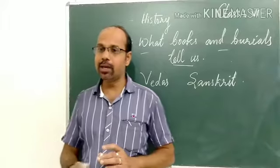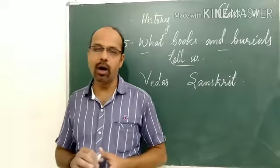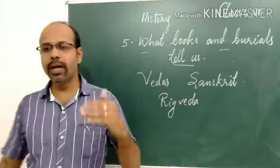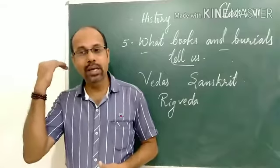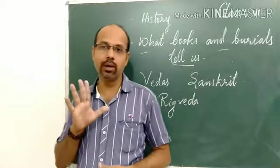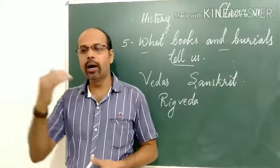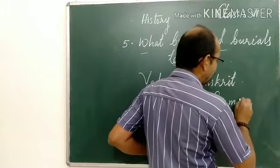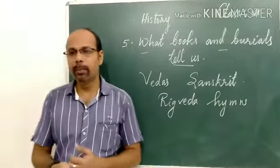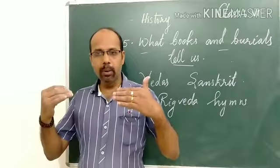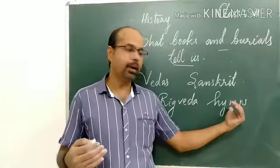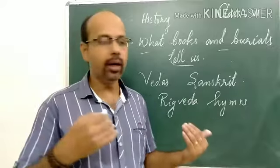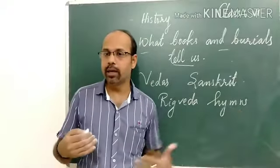Among these four Vedas, the oldest is the Rig Veda. It was not written but composed about 3,500 years ago. The Rig Veda includes more than 1,000 hymns — songs in praise of the gods. These hymns or poems, also called shlokas, are referred to as 'suktas' in the Rig Veda.